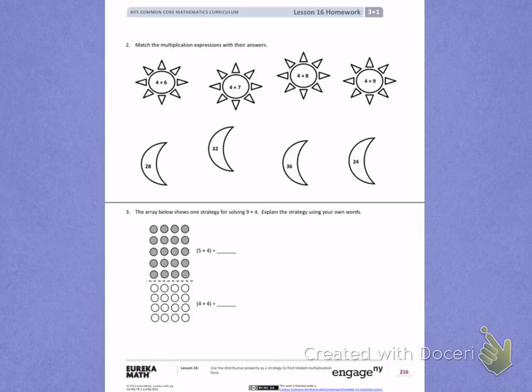Number 2. Match the multiplication expressions with their answers. I see that each of these suns are asking me to count by 4s because 4 is my number of groups. We have been practicing counting by 4s in class also. So for the first sun, I'm going to count by 4s 6 times.